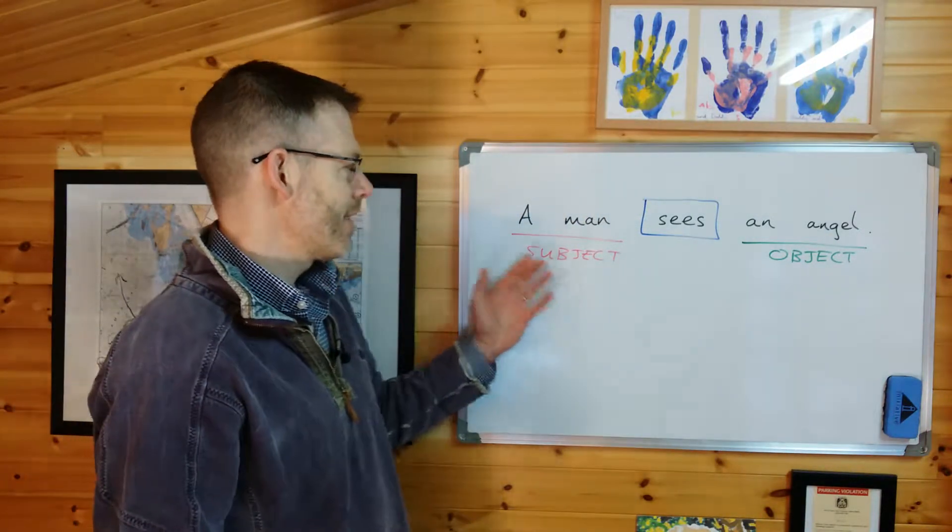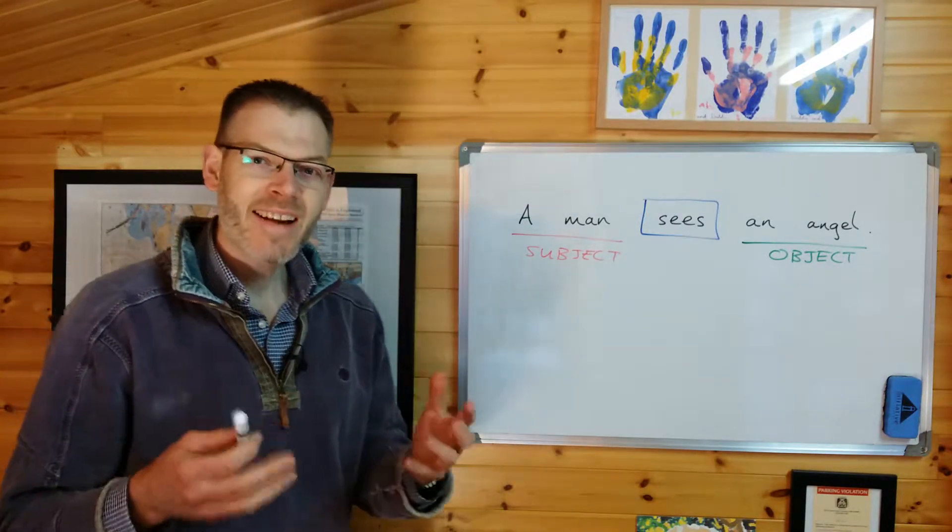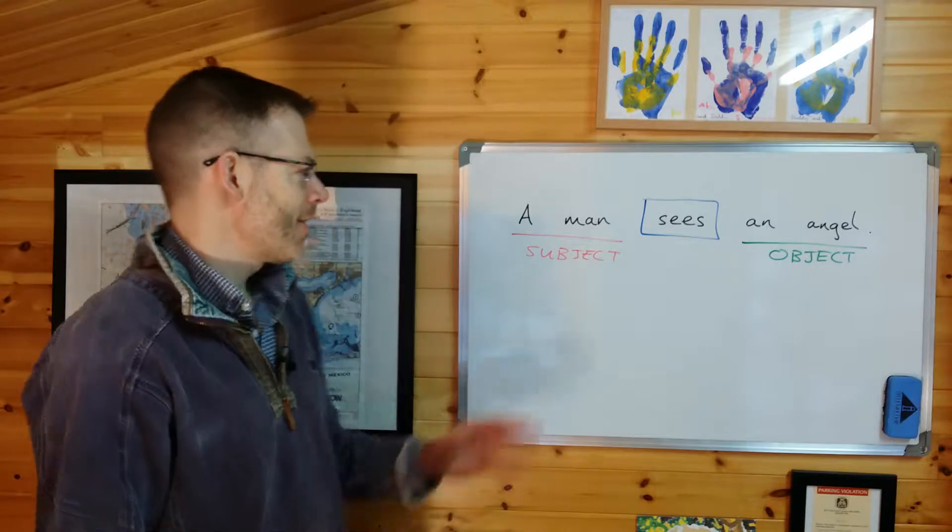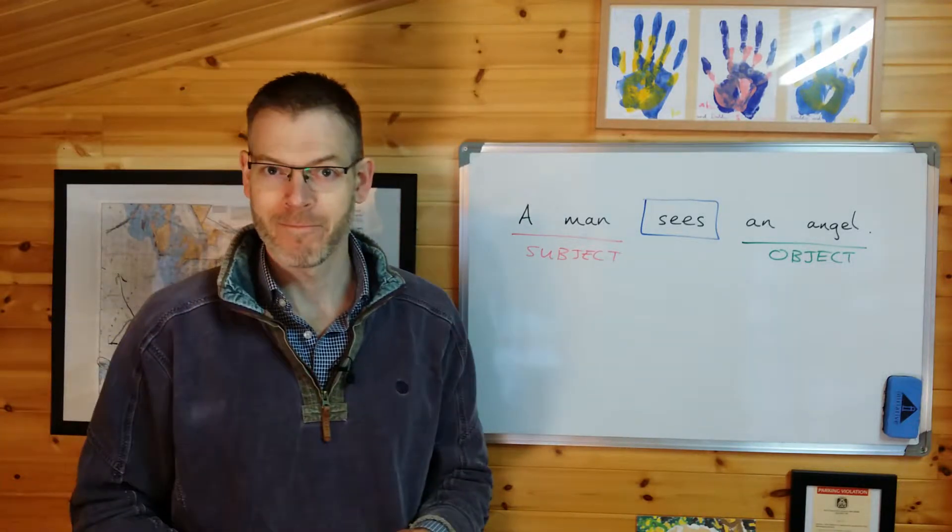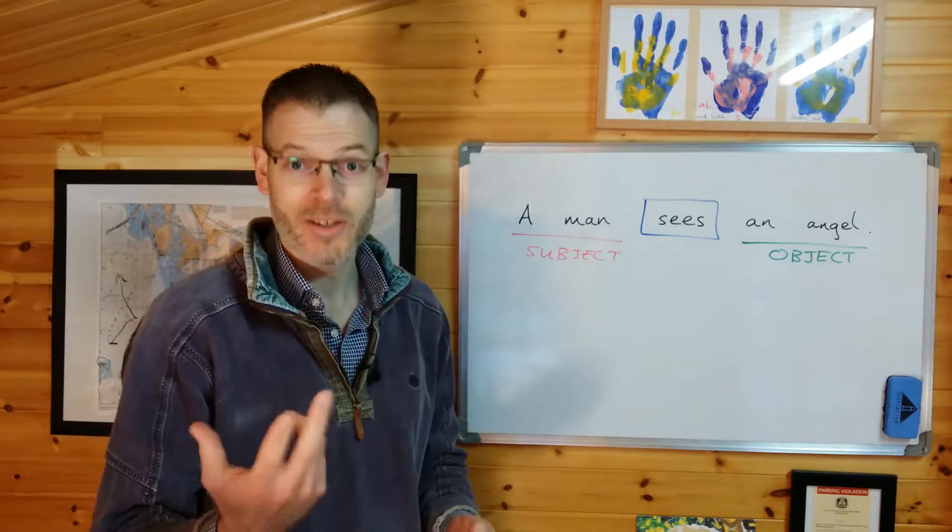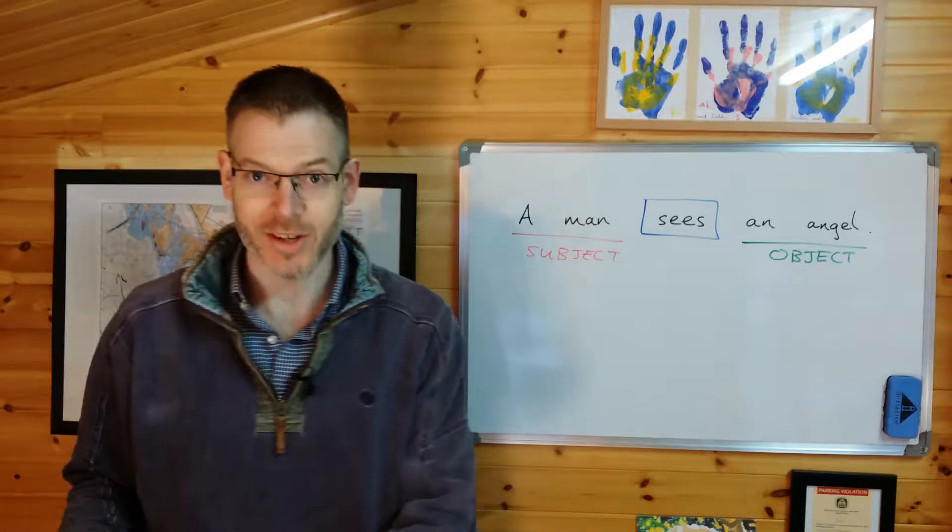Now, therefore, a man is doing the action of the verb seeing an angel. In English, how can you tell that it is the man who is seeing the angel and not the other way around? It's very simple. In English, it's word order that tells you everything in this sentence. So if I switched it around,